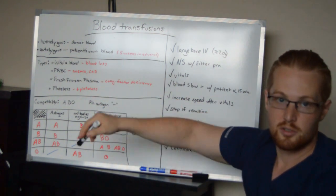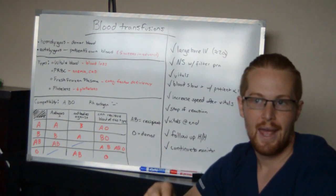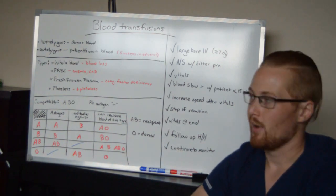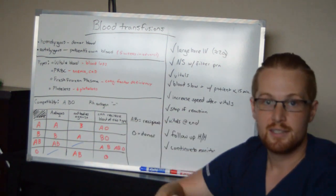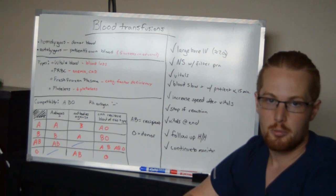There's PRBCs, which is packed red blood cells. This is just the red blood cells. And so this is beneficial for a patient that has low red blood cell count, but they already have platelets and coag factors. So a patient that has anemia due to diet or chronic kidney disease where they're not producing red blood cells properly, that's who would get PRBCs.